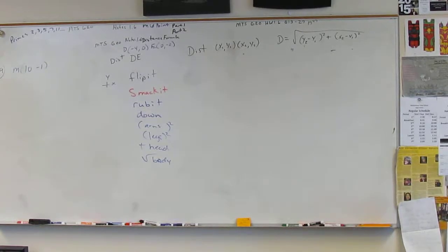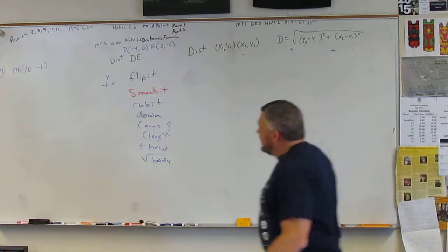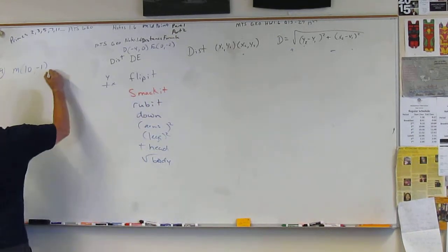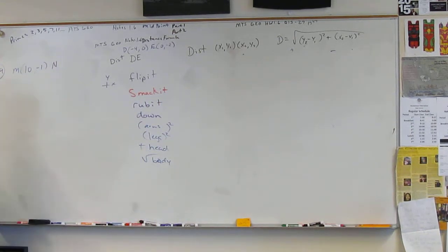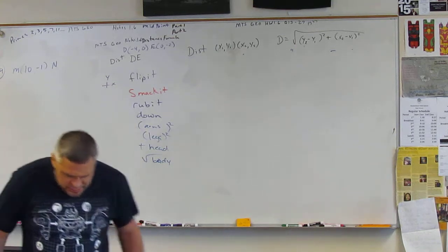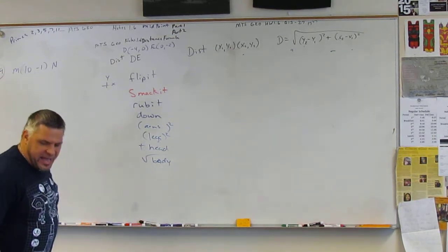All right, so number 19, we have 10 and negative 1, and n is, what is it? 2 and negative 5, right?